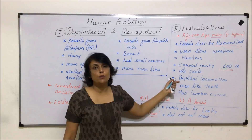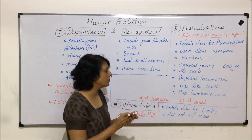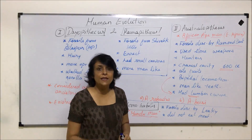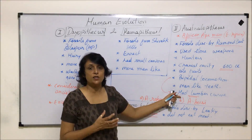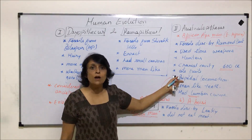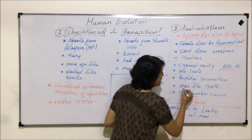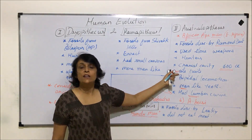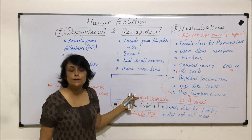Australopithecus showed bipedal locomotion — walking on two hind legs — made possible by the lumbar curve in the vertebral column. This lumbar curve is the most important feature helping organisms walk upright on two legs. Their teeth were human-like, which further suggests they probably ate fruits.